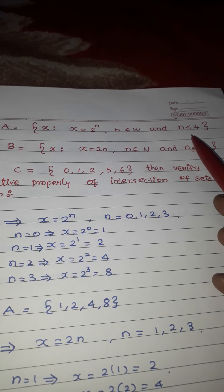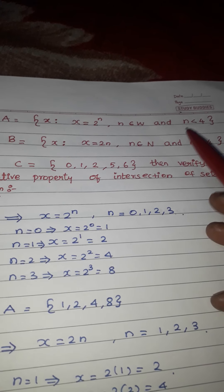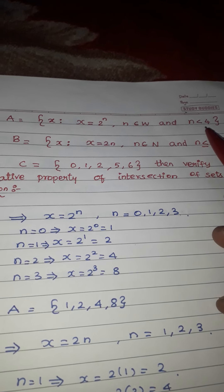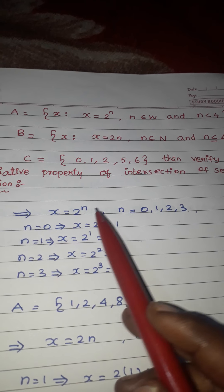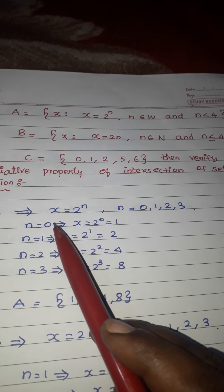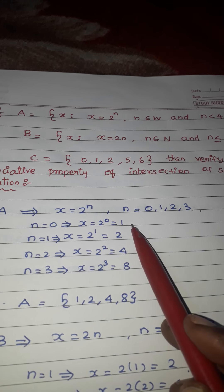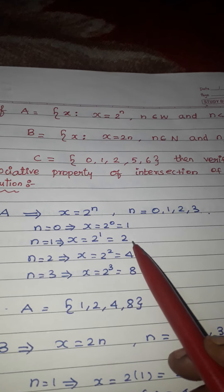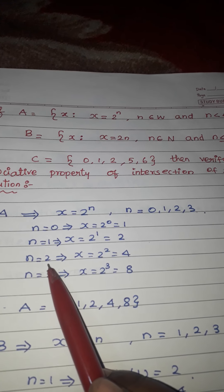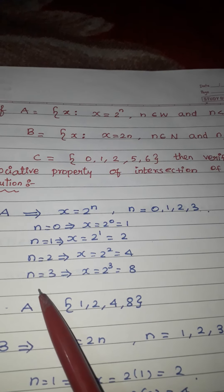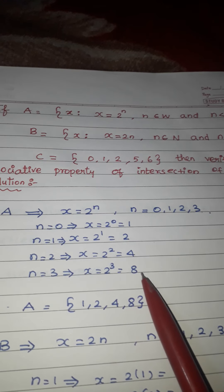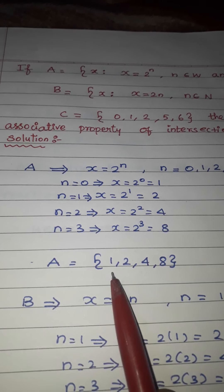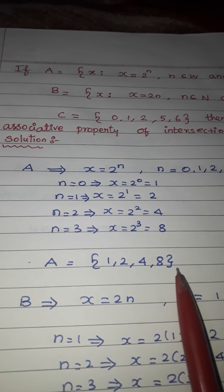But since n less than 4 with no equal to, we write up to n=3. Applying the formula: n=0 gives 2 power 0 equals 1; n=1 gives 2 power 1 equals 2; n=2 gives 2 power 2 equals 4; n=3 gives 2 power 3 equals 8. So A = {1, 2, 4, 8}.